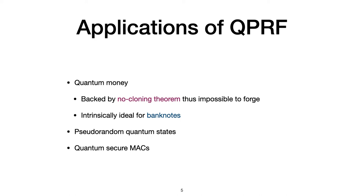Now let's see what our QPRF can be used for. For instance, it can be used to build quantum money. So quantum money is backed by the no-cloning theorem. Thus, it's impossible to forge. This is intrinsically ideal for banknotes. Also, QPRF can also be used to build pseudorandom quantum states and quantum secure MACs.